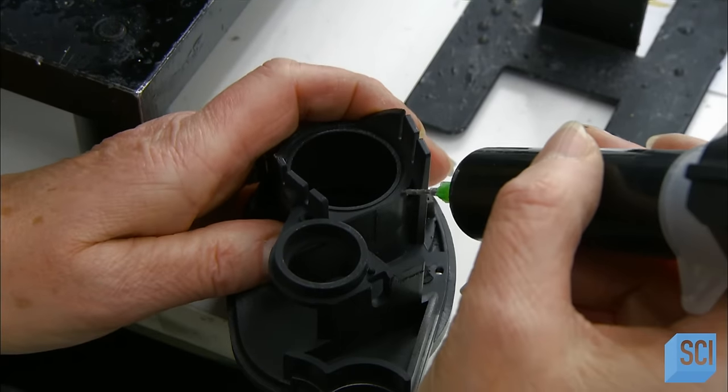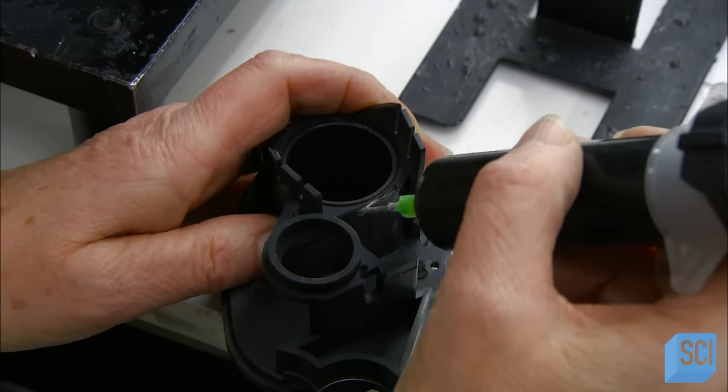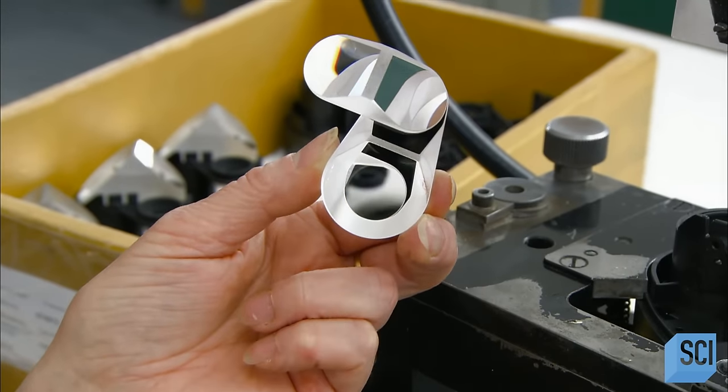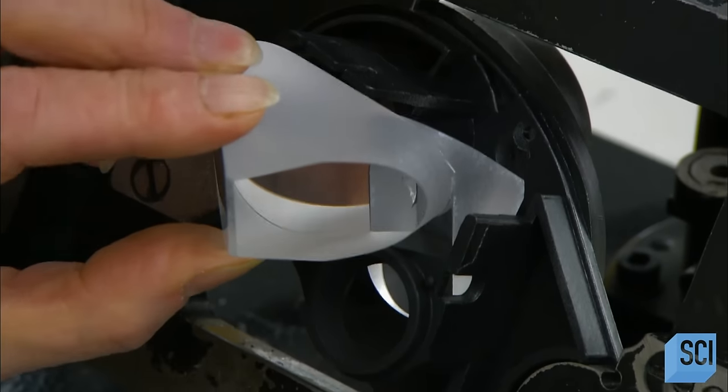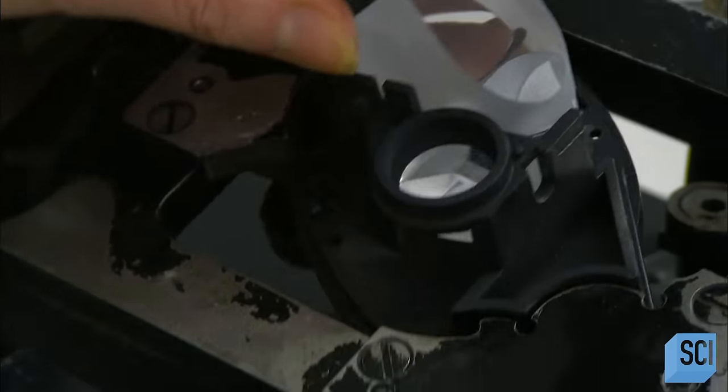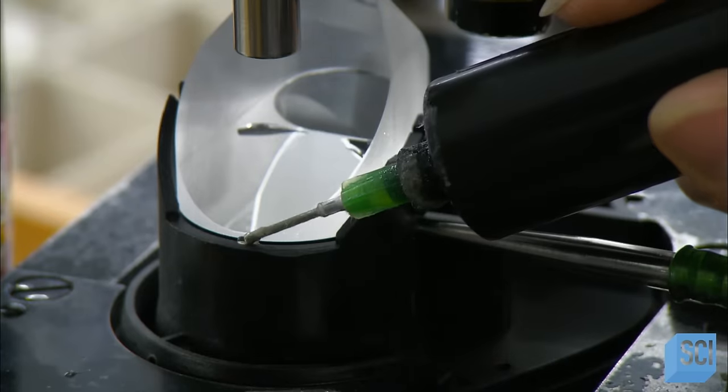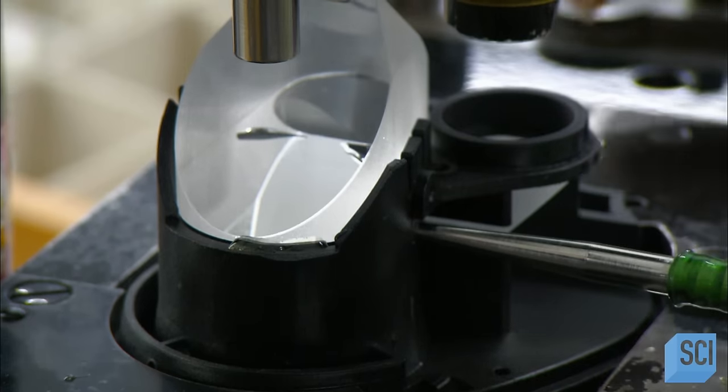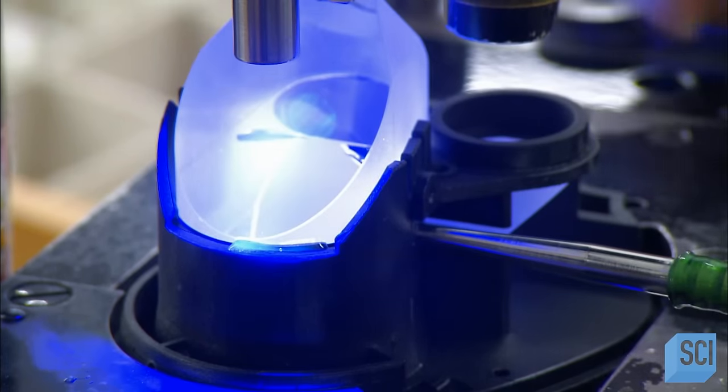Now a few drops of glue behind the objectives, where the prisms will go. Another blast of nitrogen to remove any dust. Then they insert the prisms. This optical machine aligns the focal points of the prism and its corresponding objective. Then some more glue to lock in the positioning. And a blast of UV light to dry the glue.